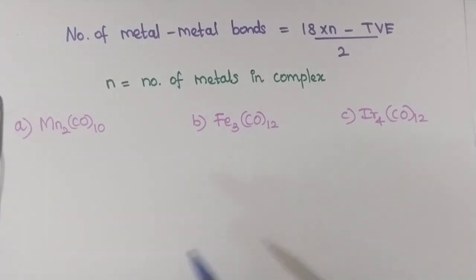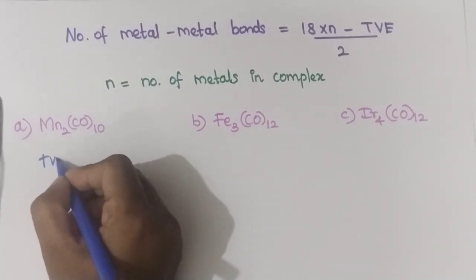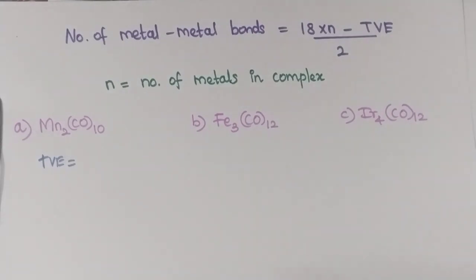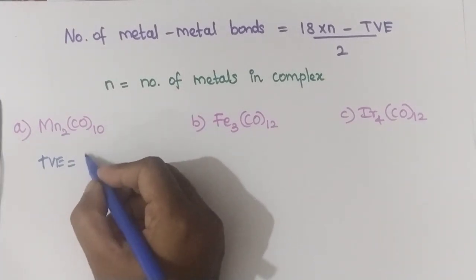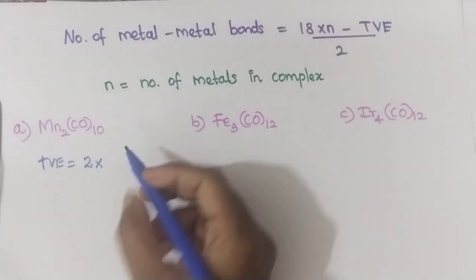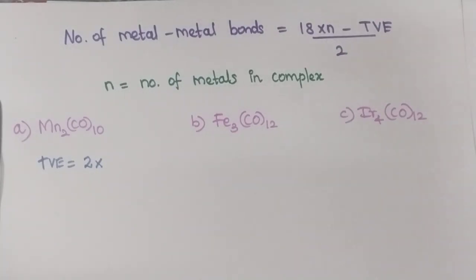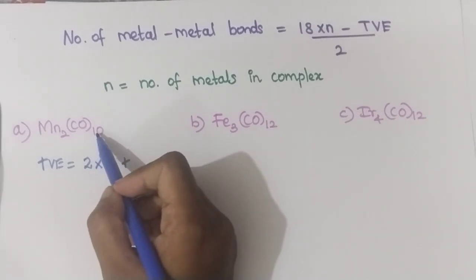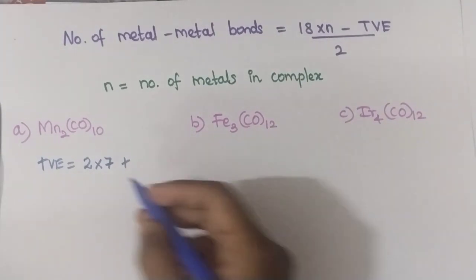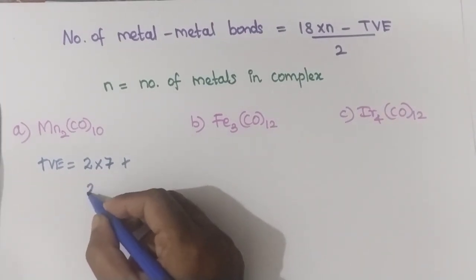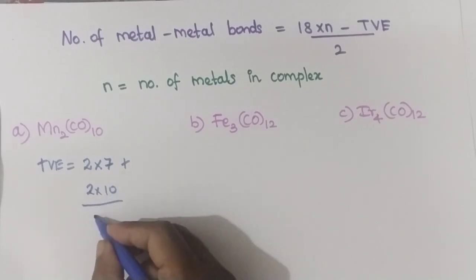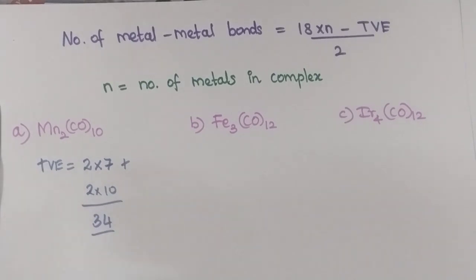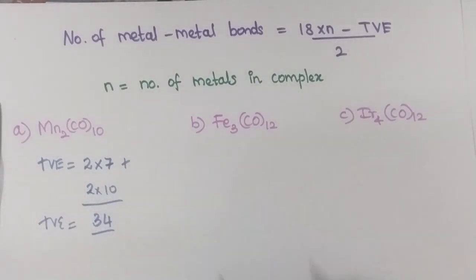In this case, consider Mn₂CO₁₀. How will you find out the total valence electron? Finding the total valence electron is very easy — we have already seen this in metal clusters. Here, 2 manganese atoms are present. Manganese has a valence electron count of 7 (d⁵ 4s² configuration), so it gives 7. Therefore 2 × 7 = 14. Plus 10 carbonyls: each carbonyl can donate 2 electrons, so 10 × 2 = 20. So 20 + 14 = 34.